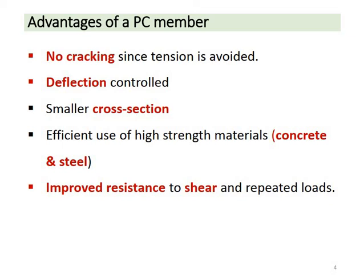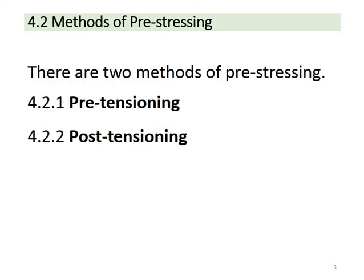The advantage of prestressed concrete involves the use of high-strength materials. There are two main methods: pre-tensioning, where the tendons are tensioned before the concrete is cast, and post-tensioning, where the concrete is cast first and then the tendons are tensioned.